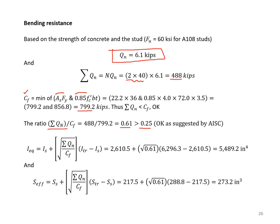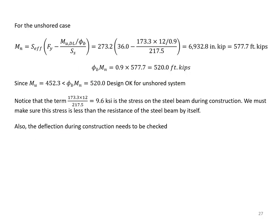Using the equivalent moment of inertia equation gives IEQ equal to 5,489.2 inches to the fourth, and the effective section modulus SEFF equals 273.2 inches cubed. Plugging into the MN equation for the unshored system with phi-B equal to 0.9 gives MN equal to 577.7 foot-kips. The factored capacity phi-B times MN equals 520 foot-kips, which is larger than the applied moment of 452.3 foot-kips, so the design is acceptable for the unshored system.